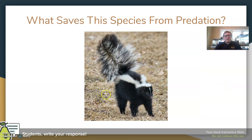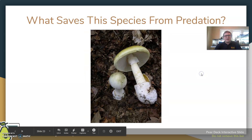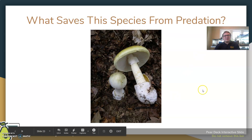Skunks have that warning coloration and a chemical foul spray that helps get rid of predators, providing a nice warning system. And the death cap mushroom is an example of an organism that is poisonous and therefore is not as likely to be preyed upon — that is what keeps it safe.